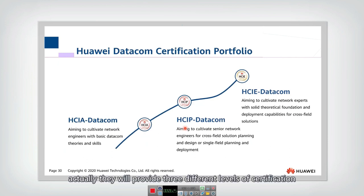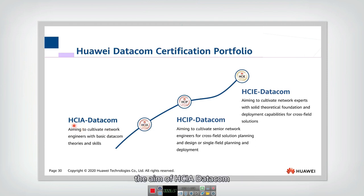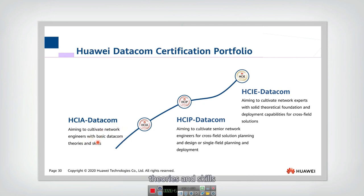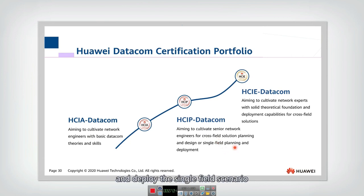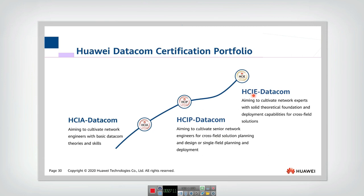Within the data communication track, there are three certification levels. The first is HCIA, which aims to cultivate network engineers with basic theories and skills. The second level is HCIP Professional, where engineers develop cross-field solution planning skills and can plan and deploy single-field scenarios. The top level is HCIE Expert, where engineers are able to perform cross-field solution planning and deployment.